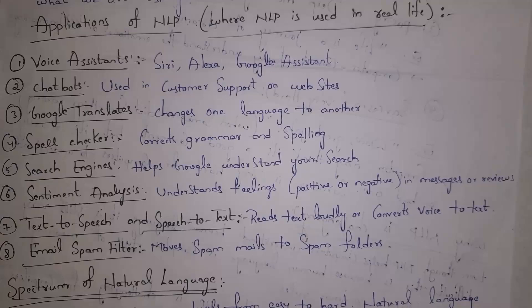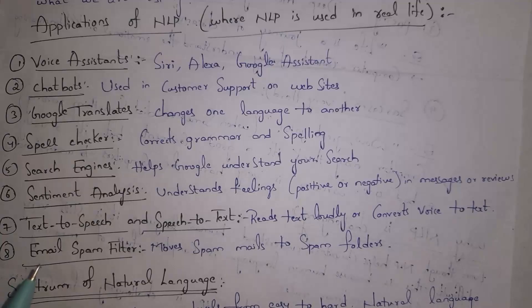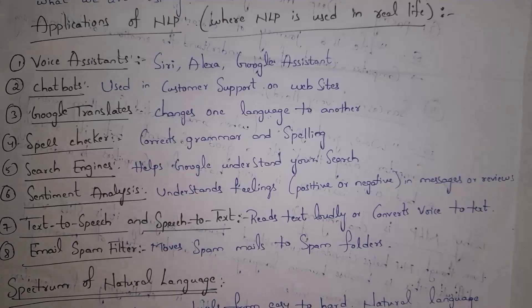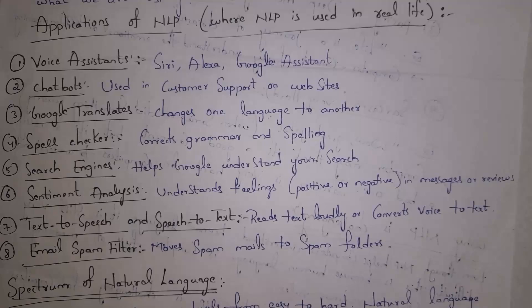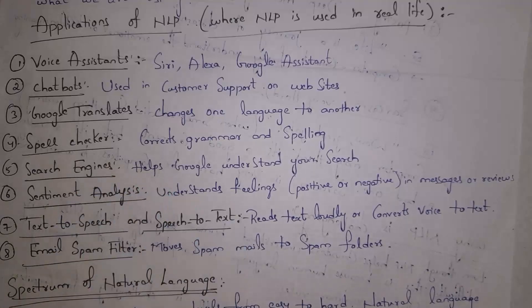The third application is Google Translate. By using the Google Translator app, we can change one language to another language — for example, English to Telugu, Telugu to English, English to Hindi, etc. All these translator apps work based on NLP. The fourth application is spelling checker. There are various spelling checking apps and software available. By using them, we can correct grammar and spelling mistakes, and all these spelling checking apps work based on NLP.